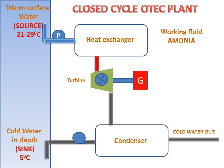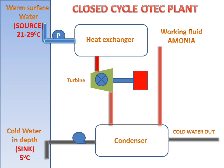The turbine will rotate and electricity will be produced with the help of a generator. Then this ammonia will be transferred to the condenser. The condenser will extract cold water from the depth of the ocean, and it is attached to the heat exchanger.